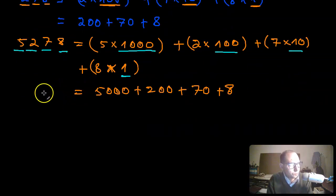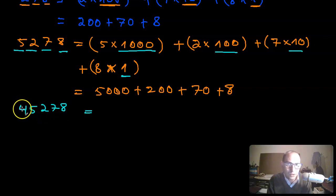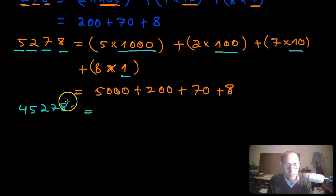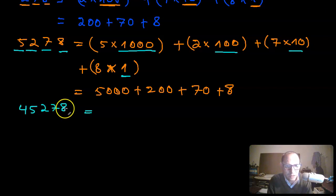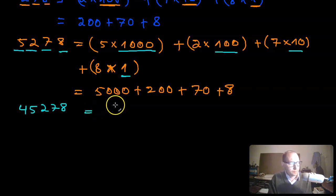The same idea applies to five-digit numbers. For example, 45,278: 4 is at the ten thousands place value, 5 is at the thousands place value, 2 is at the hundreds place value, 7 is at the tens place value, and 8 is at the ones place value. So you can write this number as 4 times 10,000, plus 5 times 1,000, plus 2 times 100, plus 7 times 10, plus 8 times 1. And that's essentially the whole idea.